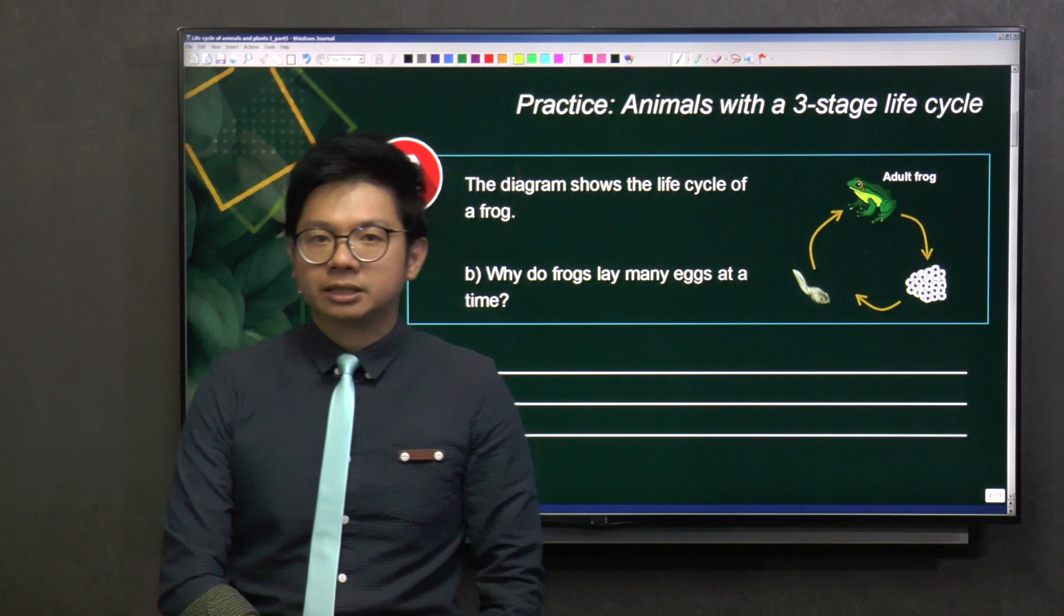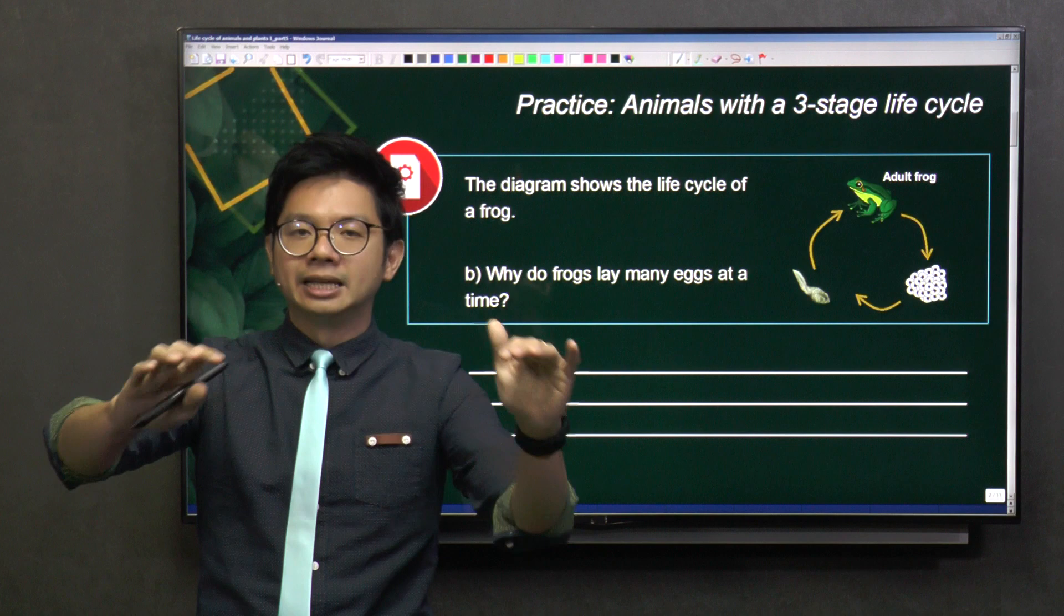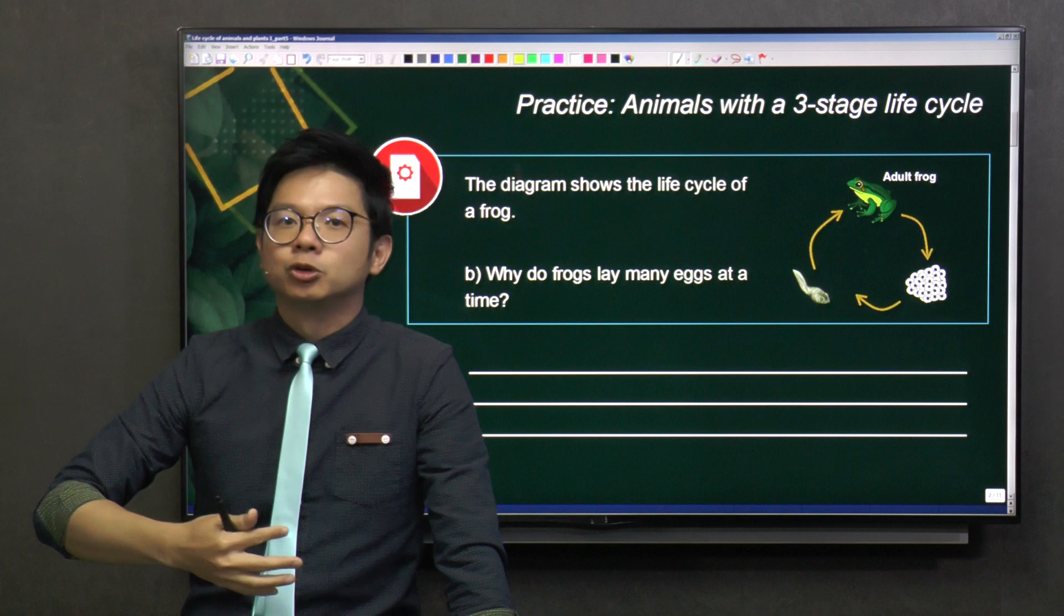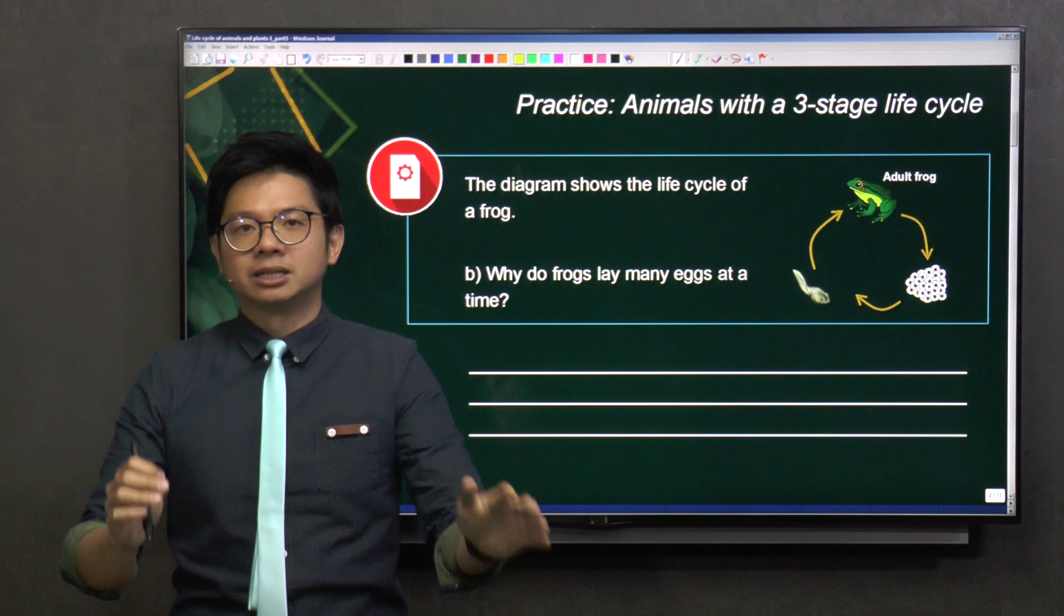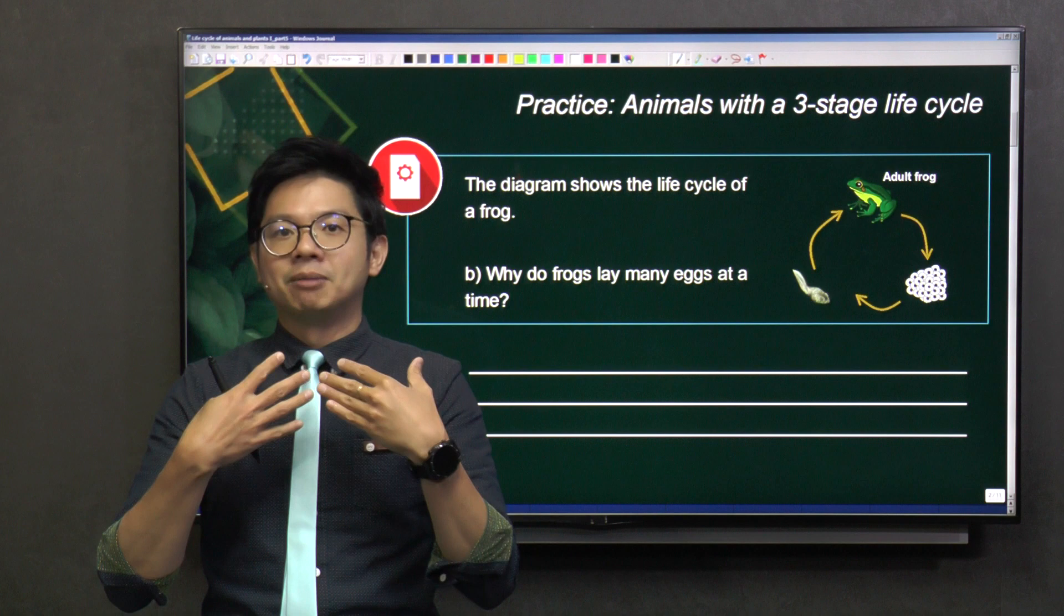If you look at different animals, some lay more eggs and some lay fewer eggs. And if you look at mammals like us, some mammals will give birth to more young alive and some will give birth to fewer young alive. What's the reason behind it?